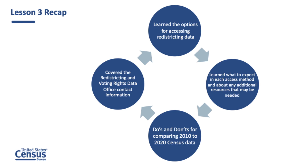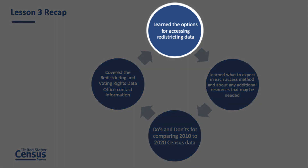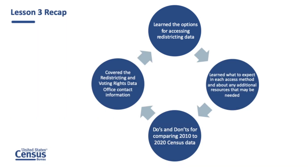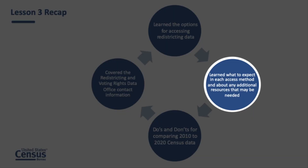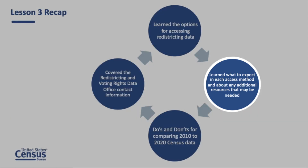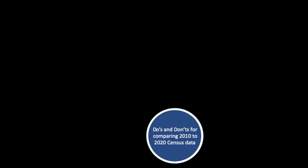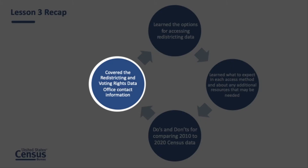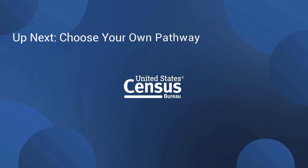Here's what you have learned in lesson three. You've learned your options for accessing redistricting data and learned a little bit about each source, including any resources needed for downloading and analysis. Alexandra then discussed the do's and don'ts for comparison of 2010 and 2020 redistricting data. Finally, we discussed the Redistricting Data Program website as being the best source for more information. It's now time to pick one or more pathways — which ones will you choose?